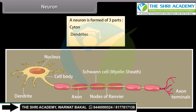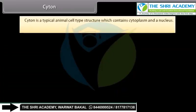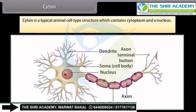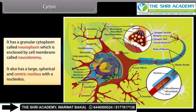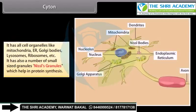A neuron is formed of three parts: cytone, dendrites, and axon. The cytone is a typical animal cell-type structure which contains cytoplasm and a nucleus. It is spherical in shape and about 4 to 135 micrometers. It has a granular cytoplasm called neuroplasm, enclosed by a cell membrane called neurolemma. It also has a large spherical centric nucleus, and all cell organelles like mitochondria, ER, Golgi bodies, lysosomes, ribosomes, etc. It also has small-sized granules called Nissel's granules, which help in protein synthesis.